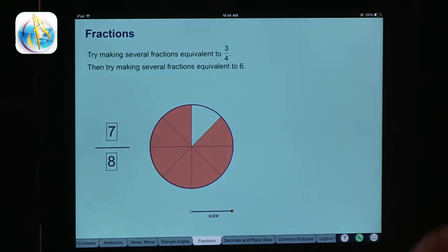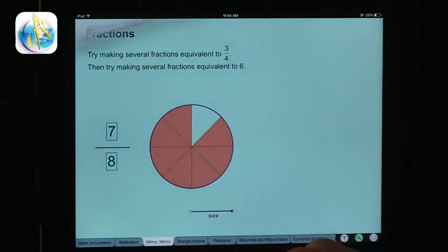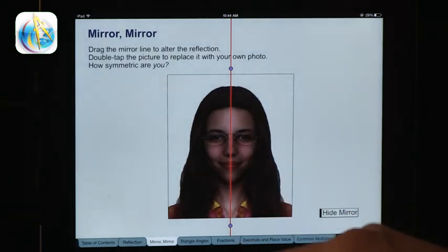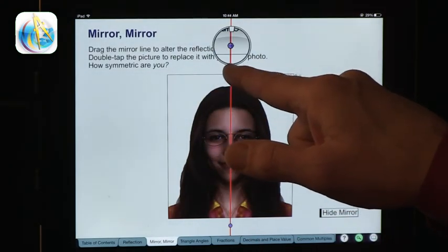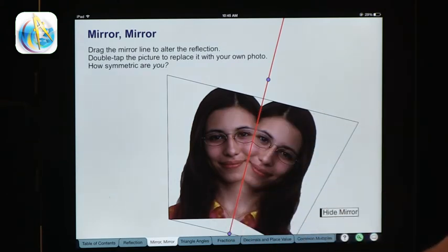So this is fractions. We covered fractions in the previous ones. But this is another representation of fractions. You can look at symmetry. And you can change the position of a mirror on a picture. You can actually insert your own picture here or any object, picture of any object, and see if the reflection is actually appropriate.